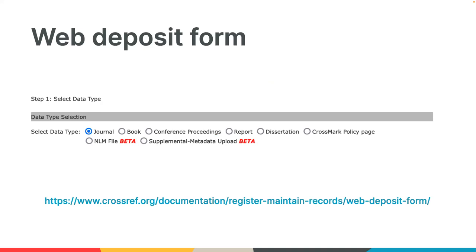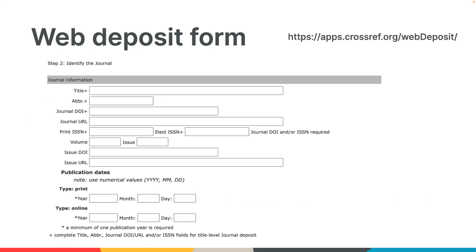Using the form, the first step is to check off the type of content you're registering: journal, book, conference proceedings, report, or dissertation. Different metadata fields will appear depending on the content type chosen. For registering journals, you can register one or more articles for up to one issue in a deposit. Enter first the relevant information for the journal and the issue, then add the articles. Once you've added the information for each article, click Finish, and then enter your Crossref account credentials along with an email address for the person registering it.